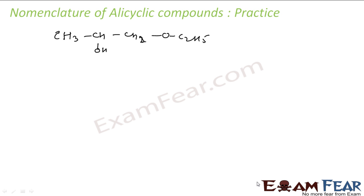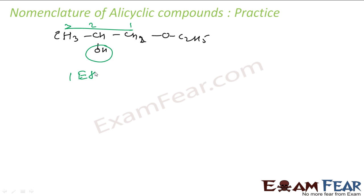Let's name this compound. Here we have one ethoxy group. This is my parent carbon chain. This is the ethoxy group and one alcohol group. Alcohol group has higher priority than the ethoxy group. Let me number them: one, two, and three. This is better because in both directions alcohol gets position two, but this way ethoxy gets position one, which is better. So at first position I have ethoxy — this is my prefix: 1-ethoxy. Then three carbons — prop — all single bonds. At second position I have alcohol — propan-2-ol. So it is 1-ethoxypropan-2-ol.